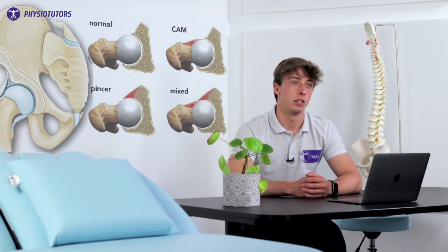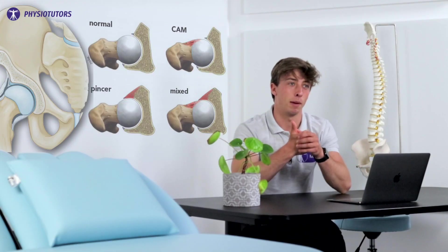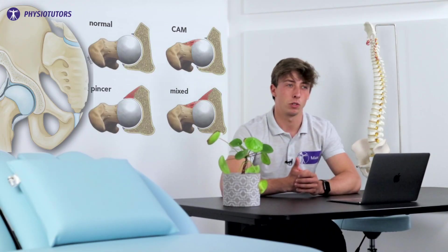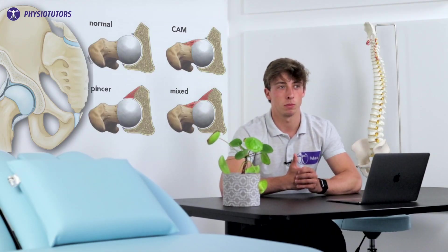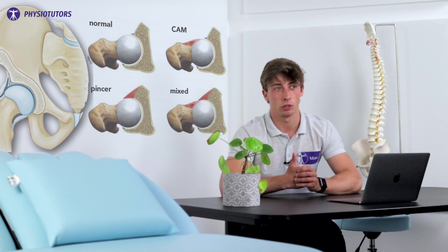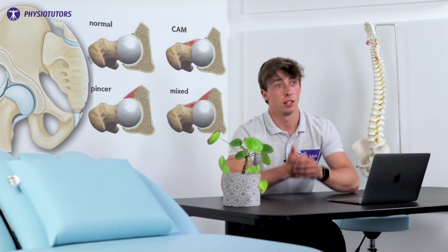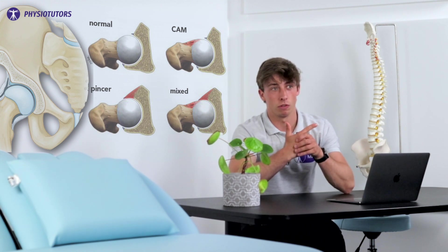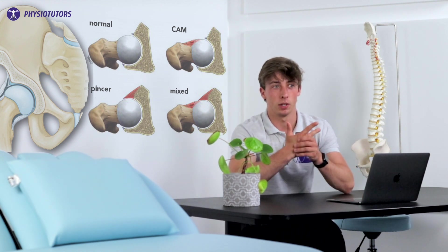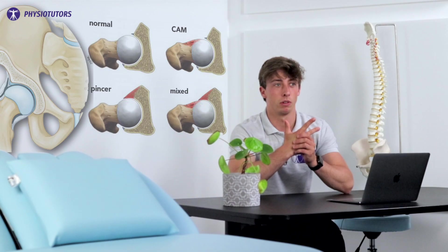There exist three types of FAI. The first is the CAM, being an enlarged femoral neck which produces symptoms with acetabular contact. The second is the pincer, which is pretty much the reverse, and the third is a combination of both.